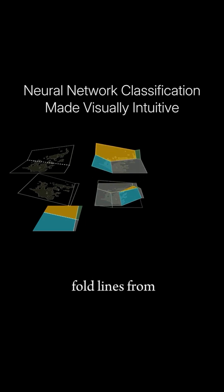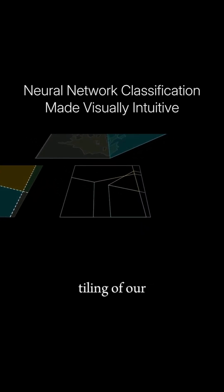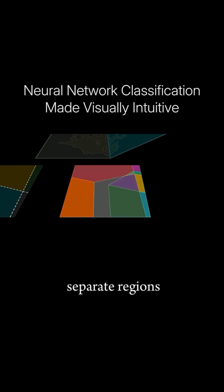Stacking the new fold lines from our second layer, these new folds at various angles come together in a significantly more complex tiling of our map, with these ten separate regions.